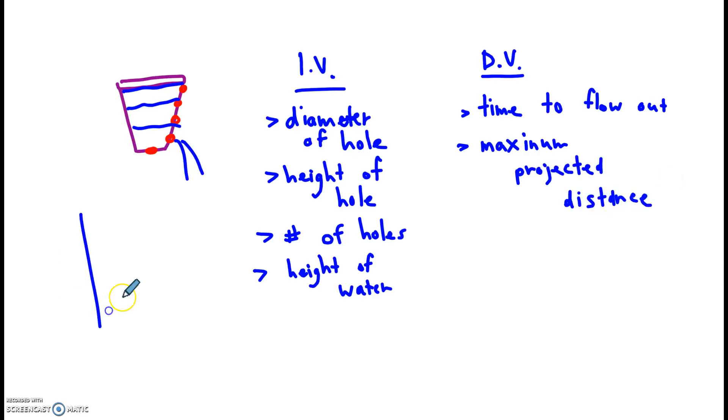You could measure the maximum projected distance of the water. So for example, you take your cup, or let's make it a big, tall, graduated cylinder or something. And the water is out here, all the way at the top. Here's the hole. And initially, that water spews out pretty far. And it gets all the way out to here. That's the maximum projected distance. But then, the next trial, you only fill it up to here. So the water doesn't go as far. It only goes to this distance. We're changing the height of the water, measuring the distance. So those are just a few things.